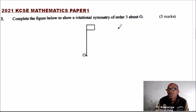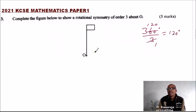Rotational symmetry of order three - we know to complete the circle we have 360 degrees, so you divide by three. You'll be able to find this is 120 degrees.